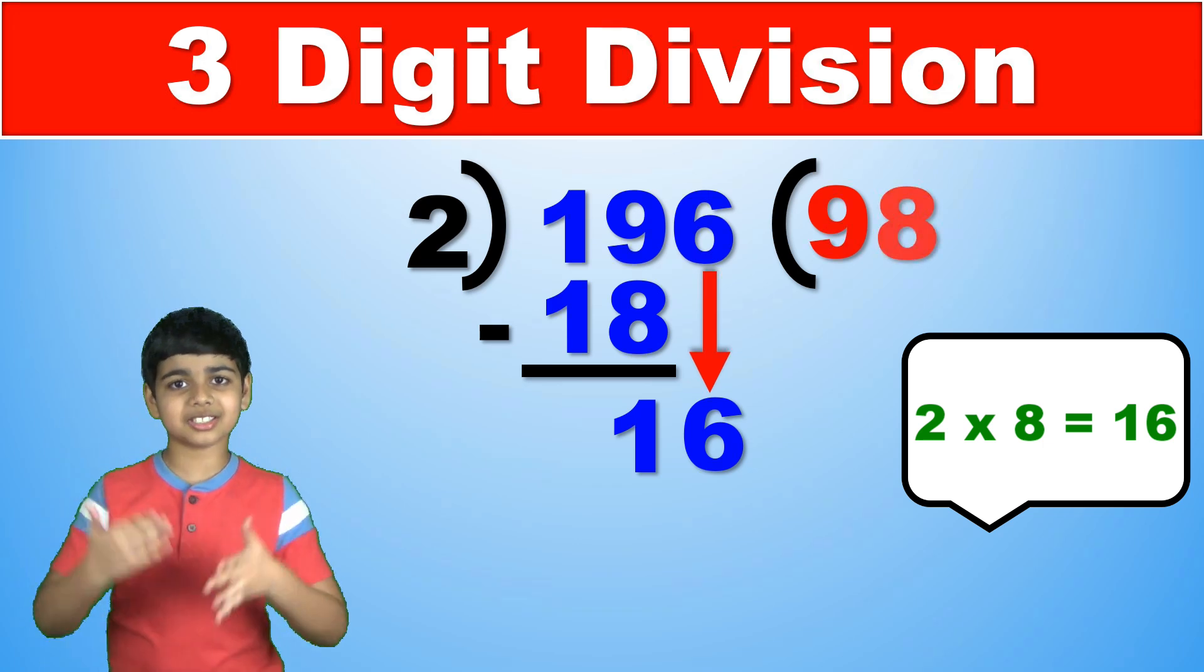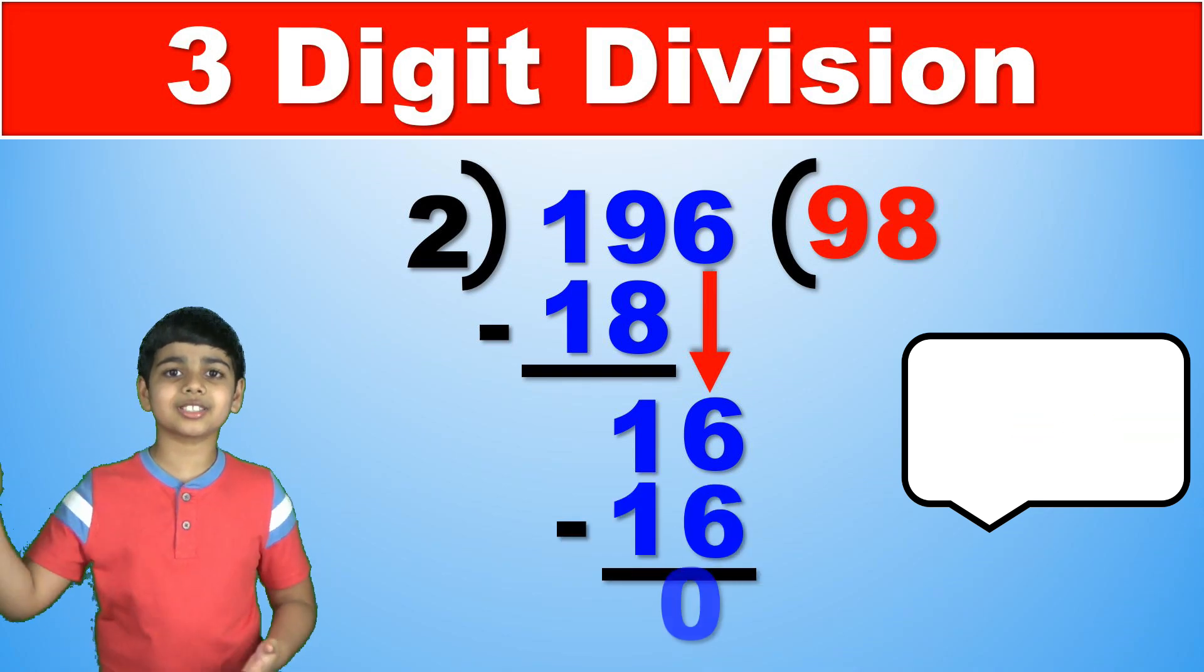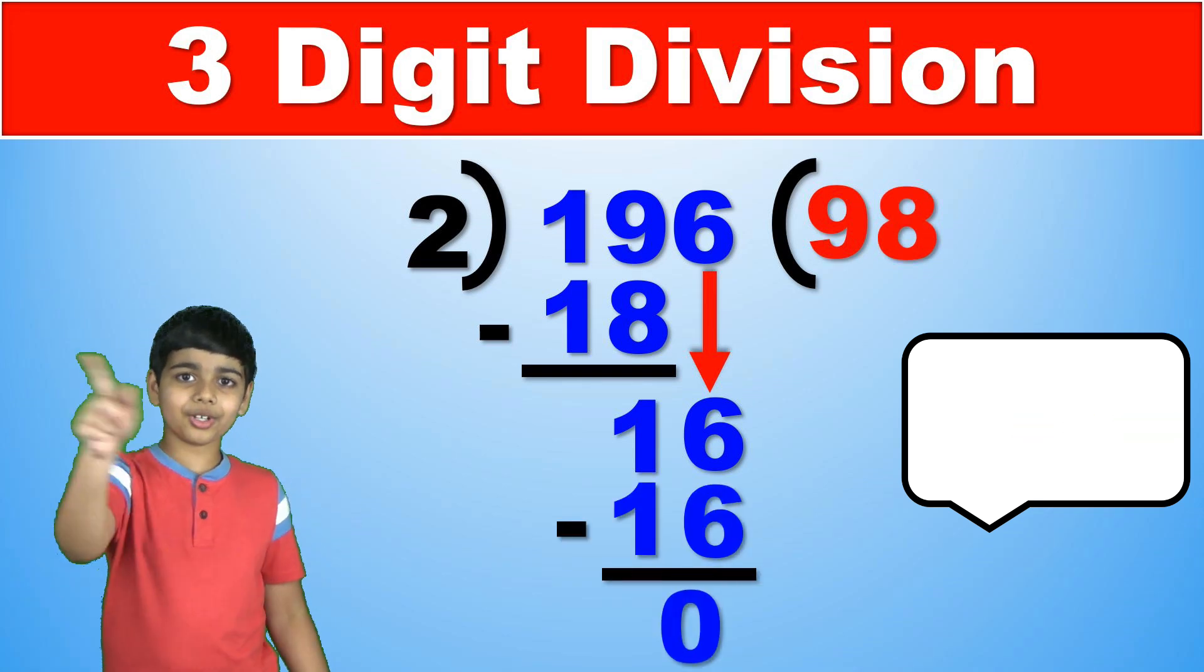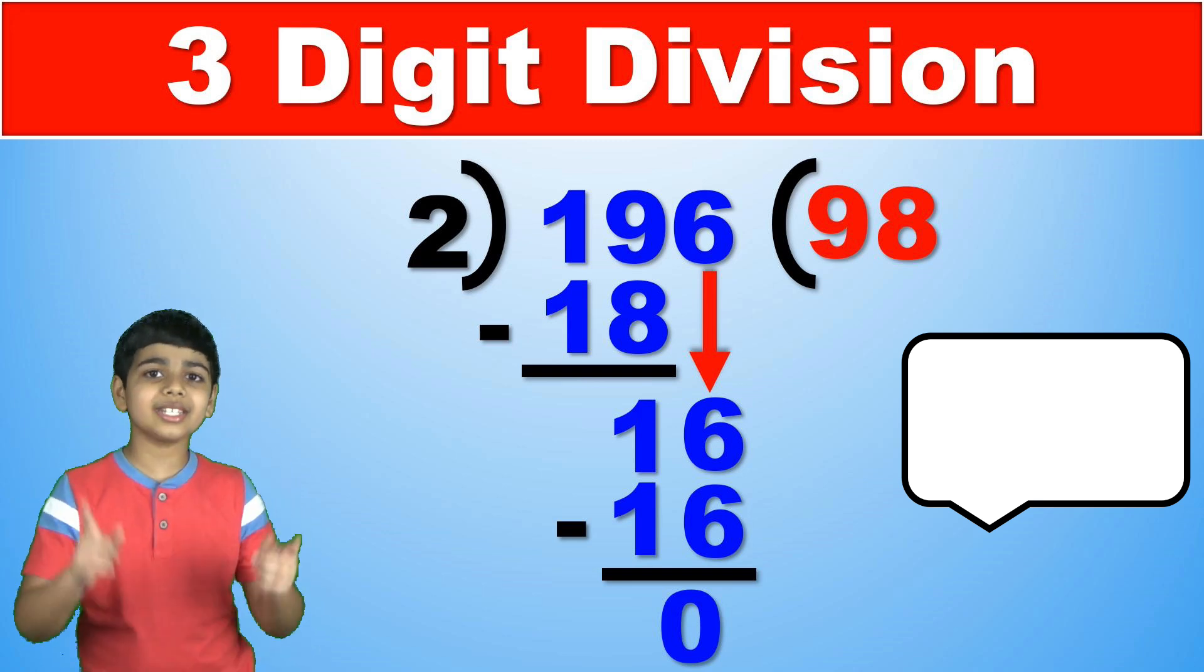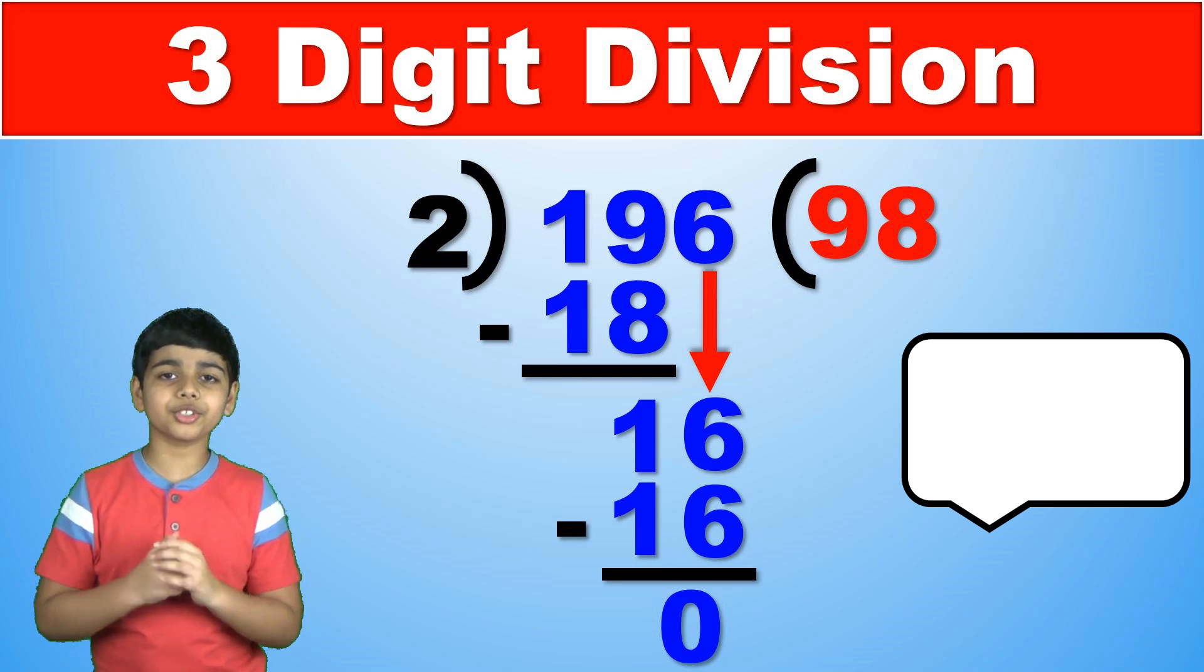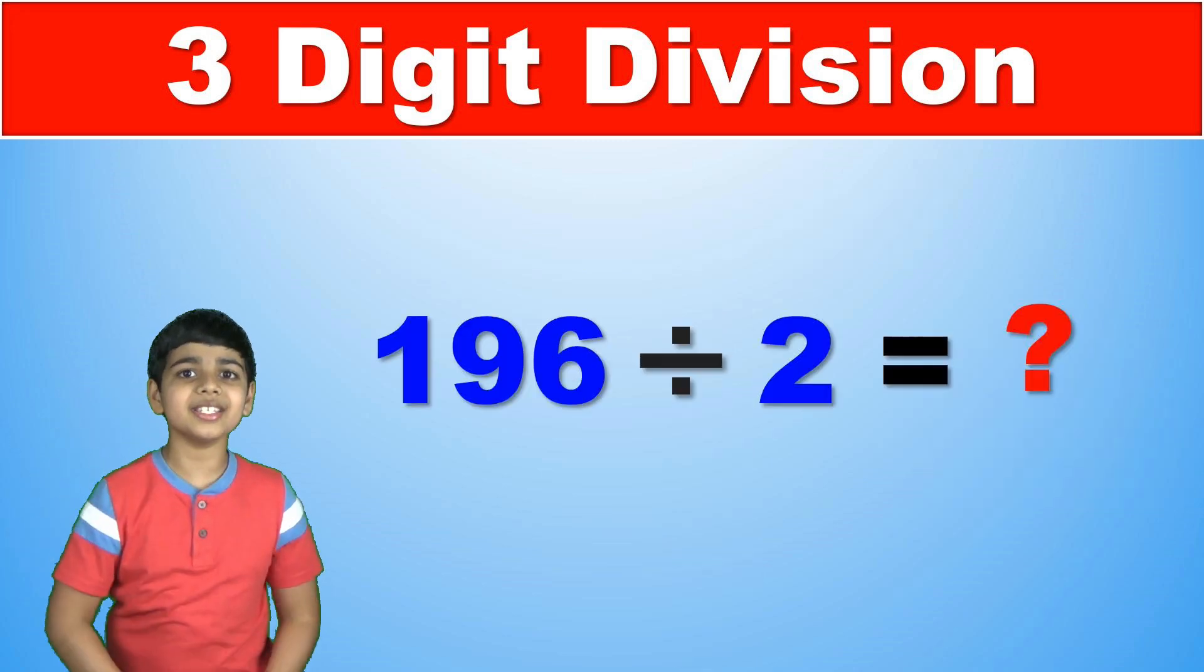And 2 times 8 is 16. So we write 16 right there and now 16 minus 16 is 0. And since the answer is 0 and there are no remaining digits left, 196 divided by 2 is 98.